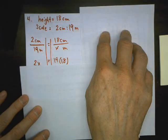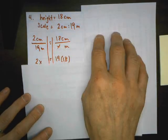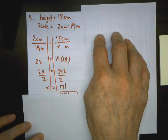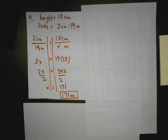That's what's missing. So like we've been doing all year, we cross multiply and then divide to solve proportions. And I see that 171 meters is the actual height.